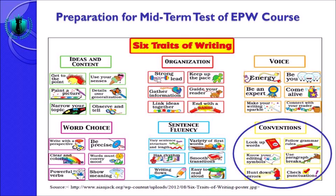Yang keempat, use paragraph breaks — gunakan paragraph breaks, antar paragraph harus ada jeda. Di EPW course, anda menulis paragraph — yang harus anda ingat adalah gunakan transition signals di supporting details dan juga di concluding sentence. Yang kelima, hunt down errors — anda harus cek kesalahan-kesalahan yang ada di dalam tulisan seperti kesalahan spelling, ejaan, dan pemilihan kosa kata. Misalnya yang seharusnya 'give' tapi ditulis 'gov' — itu salah.